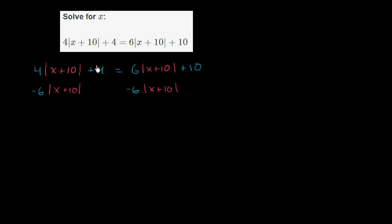And likewise, I want to get all my constant terms. I want to get this 4 out of the left-hand side. So let me subtract 4 from the left and then I have to also do it on the right. Otherwise, my equality wouldn't hold. Now let's see what we end up with.